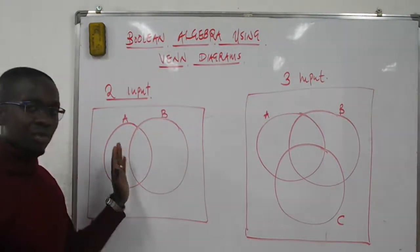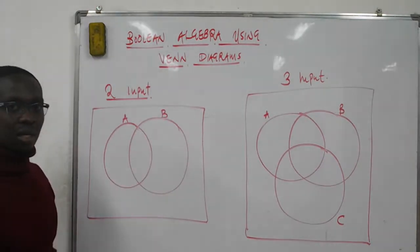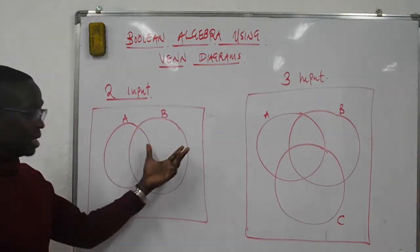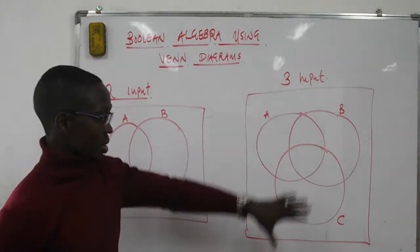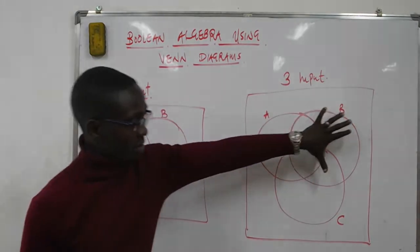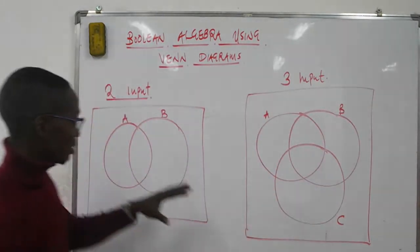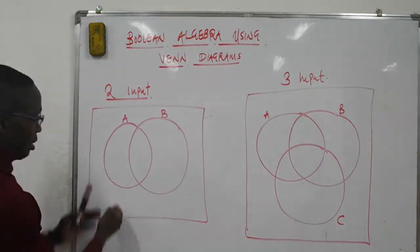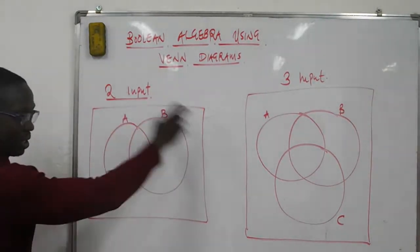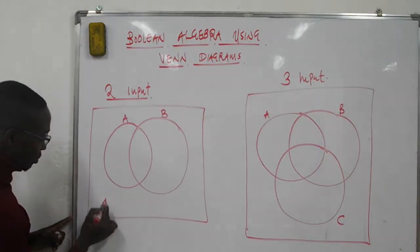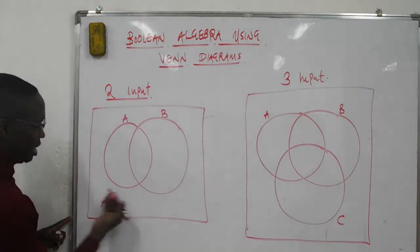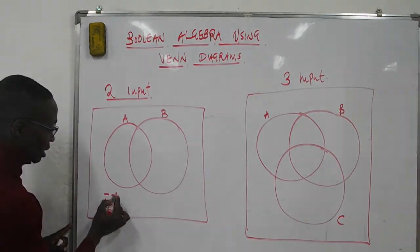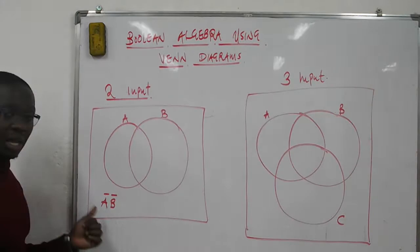For the two input variable, you have inputs A and B. You make a Venn diagram with two sets, set A and set B. You define all the regions as a product of the given variables. The region in the union set will be defined as a product of A and B, but in the space outside, A does not appear and B does not appear. So this region outside is A bar, B bar.